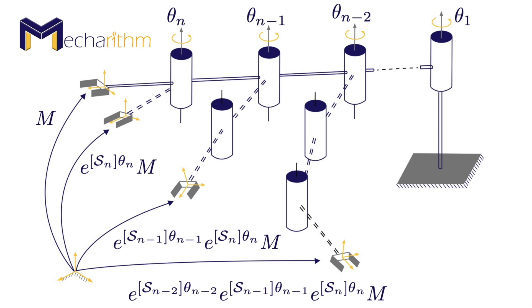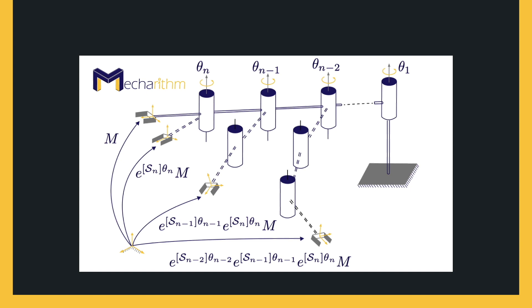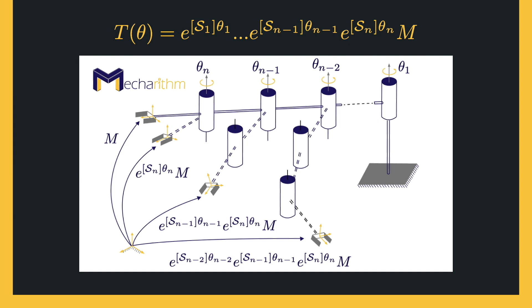On the other hand, screw theory also provides a geometric description of robot motions that makes kinematic analysis very simple in comparison to other methods, like Denavit-Hartenberg, which we'll see in the coming lessons. The pose of the end effector relative to the base frame can simply be found by the product of the exponential formula and the screw theory. In this formula, S1 to Sn represent screw axes expressed in the fixed base frame when the robot is at its home position, and Theta1 to ThetaN are joint variables. M is the end effector configuration when the robot is at home position. Unlike conventional methods like Denavit-Hartenberg, this method doesn't require link reference frames to be defined, which is a great lifesaver.